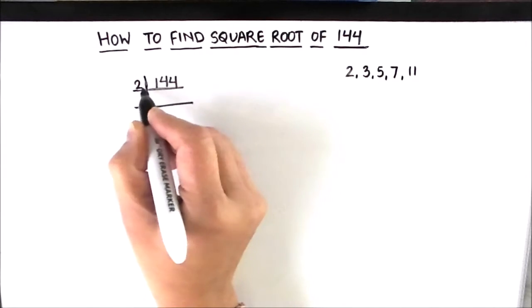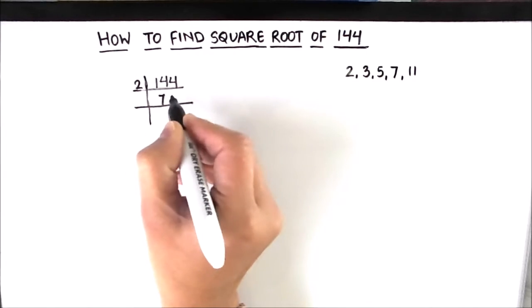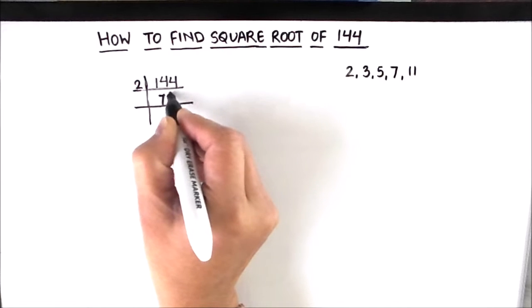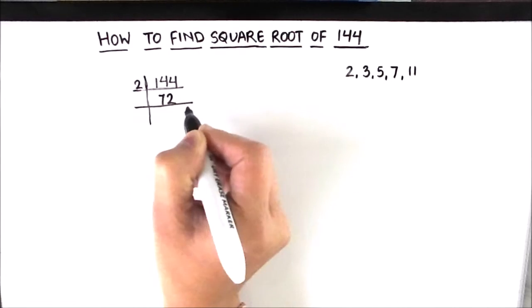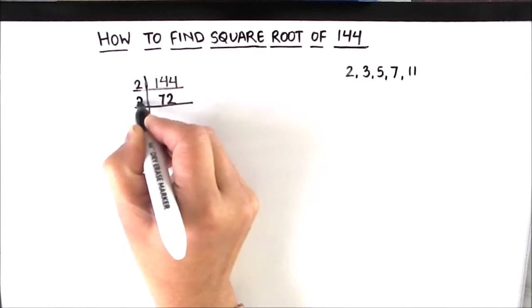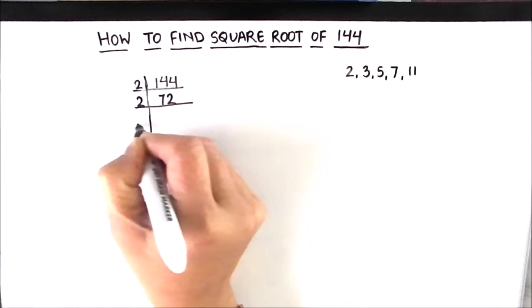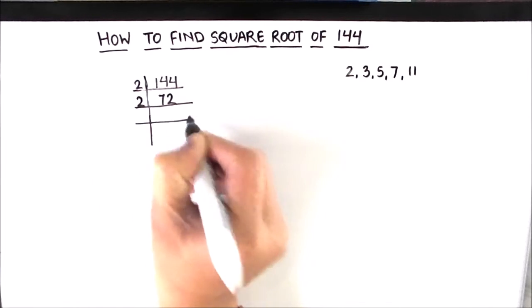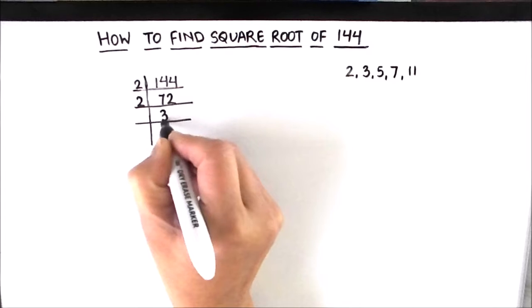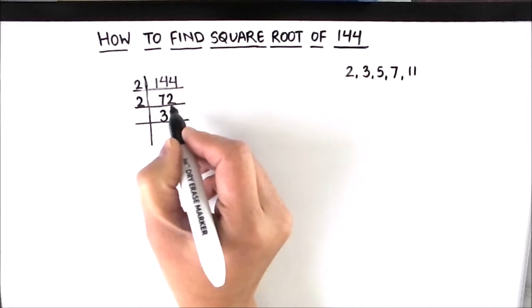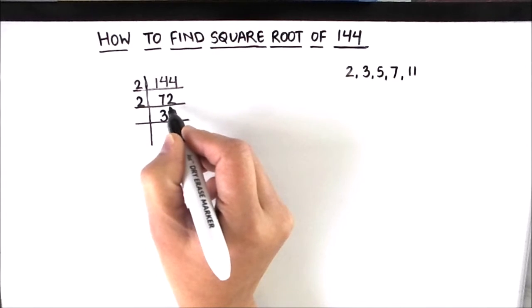So let's divide. 2 times 7 is 14 and 2 times 2 is 4. 72 is an even number so it can easily be divisible by 2. So we are going to use 2 again. 2 times 3 is 6, so 1 will be remainder, this becomes 12. So 2 times 6 is 12.